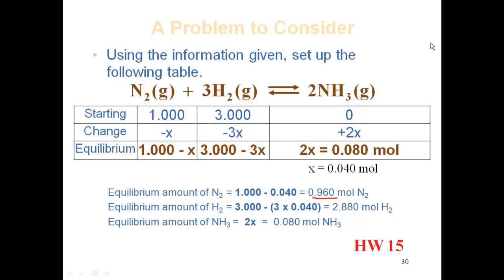Hydrogen is 3 - 3x, which is 3 times that 0.04. I'm subtracting that from 3, which gets me 2.880 moles of hydrogen. And the equilibrium amount is 2x, so we already knew the answer is 0.080 moles of ammonia.